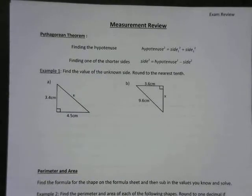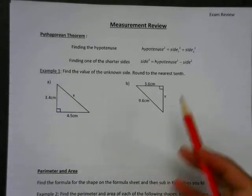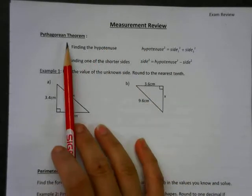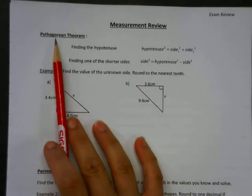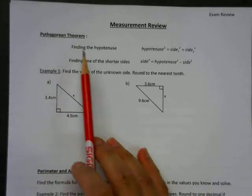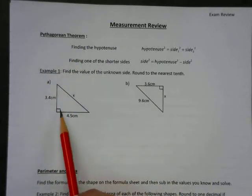Alright, so here's the grade 9 review. I'm only going to do a couple pages at a time, so we'll start with the measurement review. The first thing we're going to talk about is Pythagorean Theorem, and this only applies to right angle triangles.